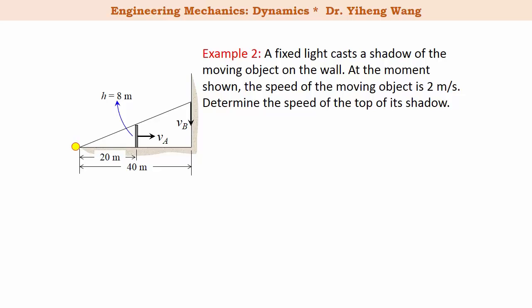For this type of problem, first step we still need to set up the proper position vectors. Here SA and SB are set up along different axes, but they are both originated from fixed points, and they represent the position of the moving object and the top of its shadow respectively.